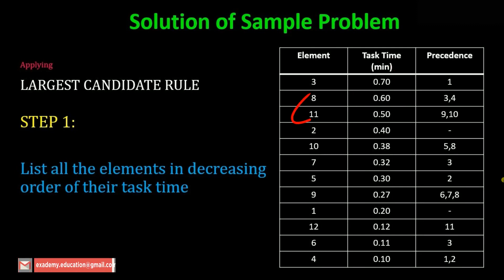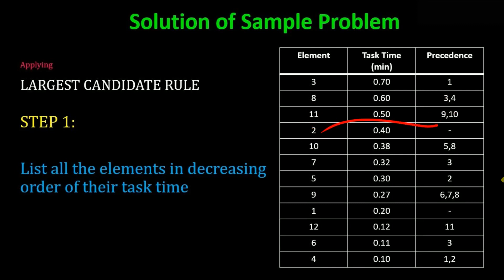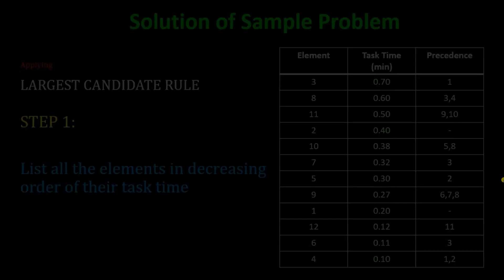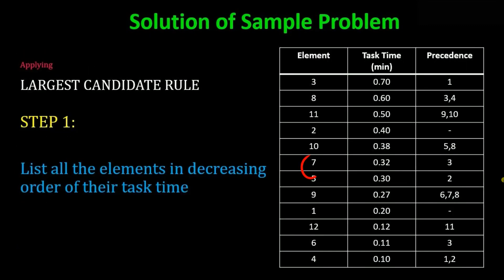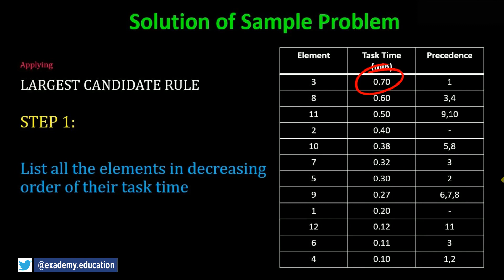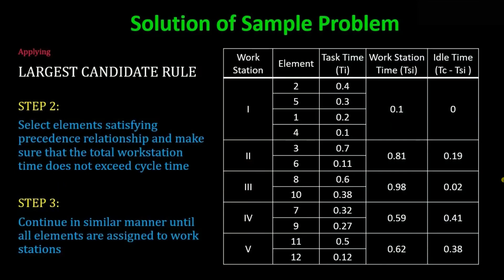We continue checking: element 11 — not allowed; element 2 — already done; element 10 — precedences not satisfied; element 7 — its task time of 0.32 added to 0.7 gives 1.02, exceeding the cycle time. We proceed in the same manner, checking each element's precedence and task time constraint, eventually completing the remaining workstations.